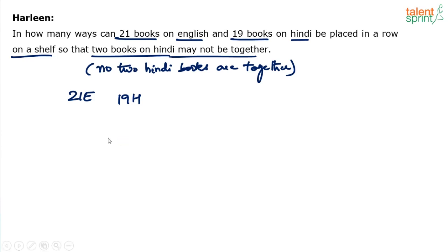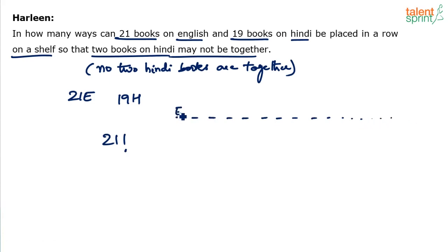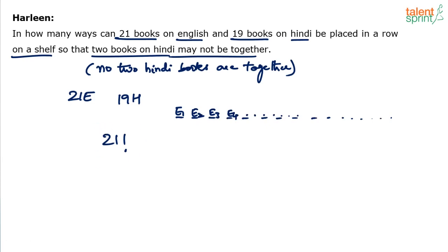In how many ways can we arrange the 21 English books? There are 21 places — E1, E2, E3, E4, and so on up to 21. So the 21 English books can be arranged in 21 factorial ways.